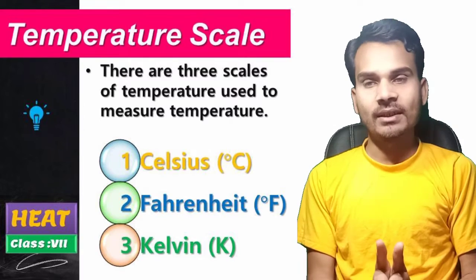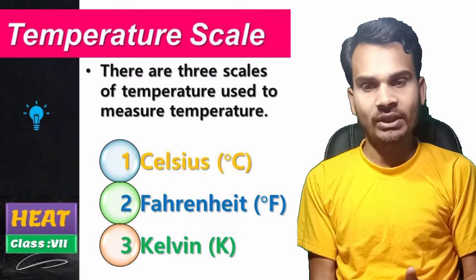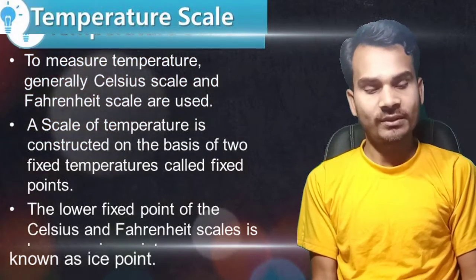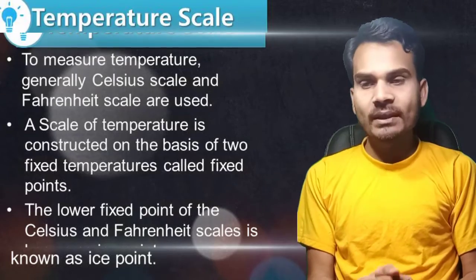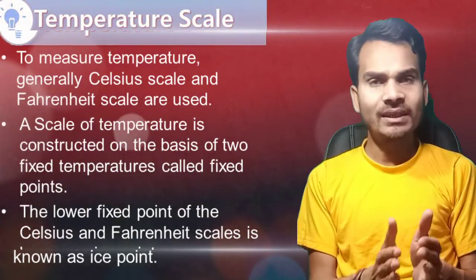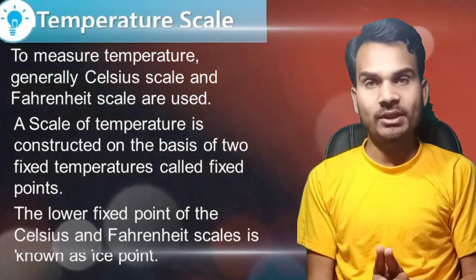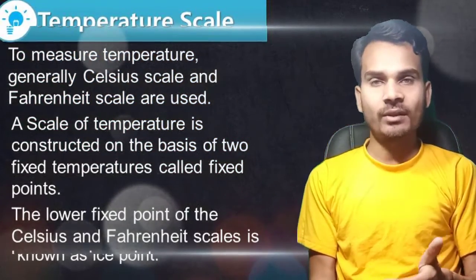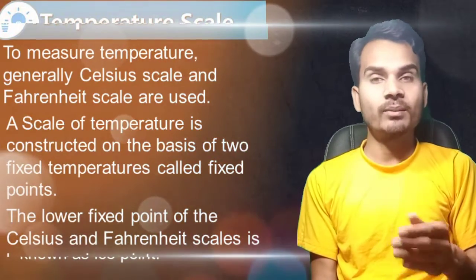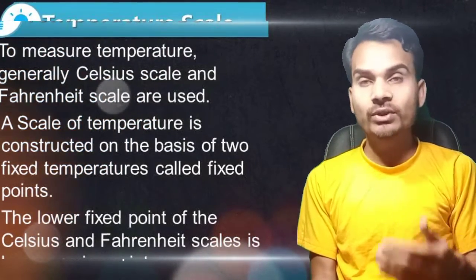There are temperature scales: Celsius, Fahrenheit, and Kelvin. Celsius uses degrees Celsius, Fahrenheit uses degrees Fahrenheit, and Kelvin uses K. Generally, the Celsius and Fahrenheit scales are used for everyday temperature measurement. A temperature scale is constructed on the basis of two fixed points — a lower fixed point and an upper fixed point.